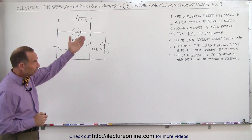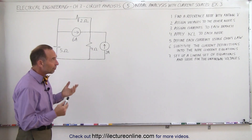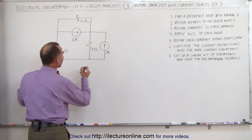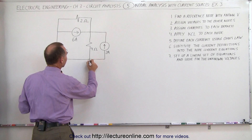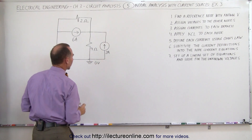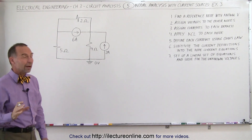Let's follow our steps. First, we want to find a reference node with known voltage. We can go ahead and connect this to ground, forcing this to be at zero volts. That will then be our reference node.